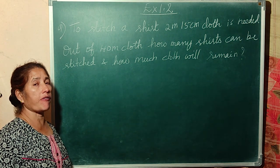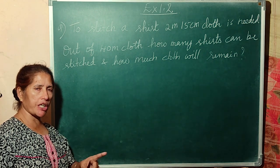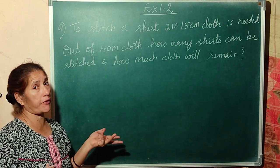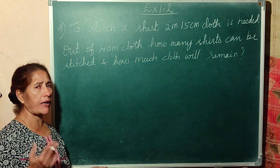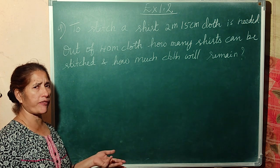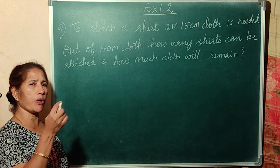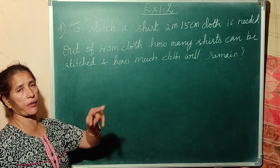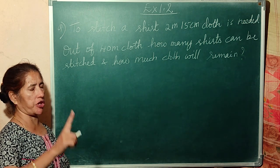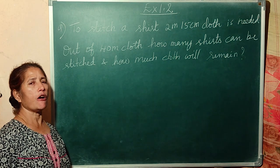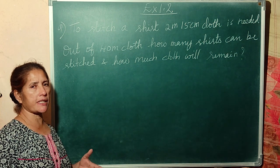Understand the situation: for one shirt, 2 meters 15 centimeters of cloth is needed. Since the units are different, we convert both into centimeters. 1 meter is equal to 100 centimeters, so 2 meters is 200 centimeters. 200 plus 15 equals 215 centimeters of cloth needed for one shirt. Totally 40 meters are there, meaning 40 into 100 equals 4,000 centimeters.